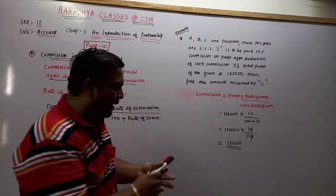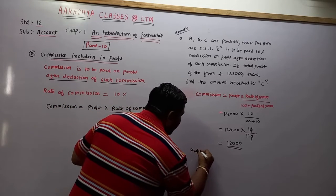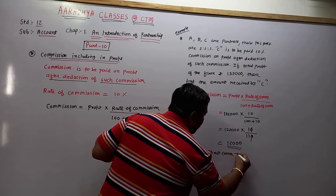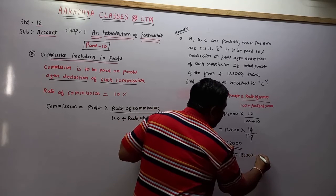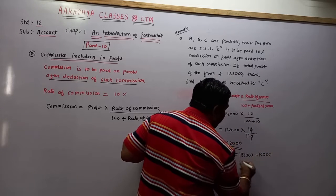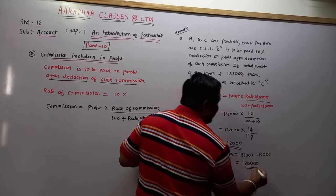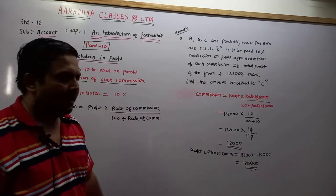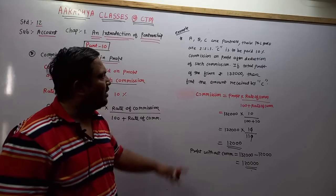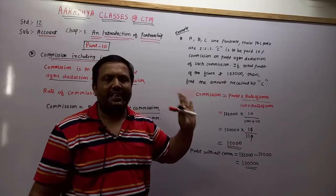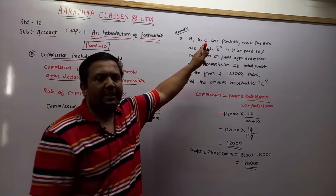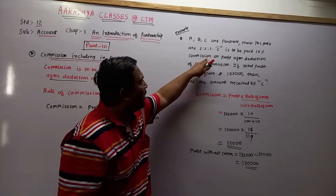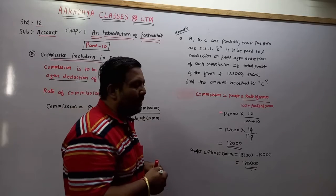Question में पूछा है: find out the amount received by C. तो देखो — Profit without commission कितना होगा: ₹1,32,000 total profit में से ₹12,000 commission minus कर दो, तो ₹1,20,000 profit without commission आया। अब यह ₹1,20,000 ratio के मुताबिक distribute करना है। अगर profit and loss ratio question में न दिया हो तो equally distribute करते हैं, पर यहाँ C का ratio 1 दिया हुआ है।